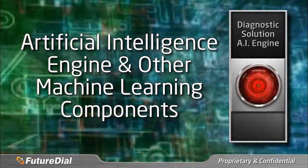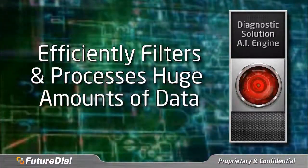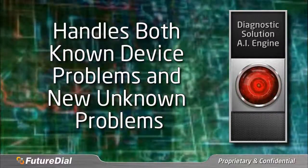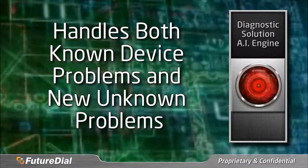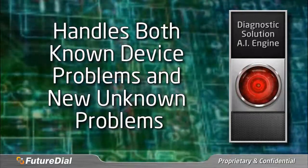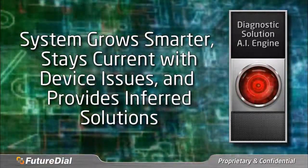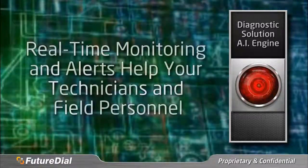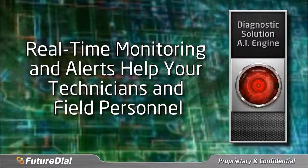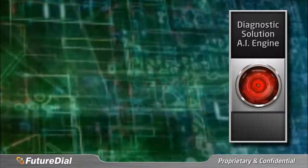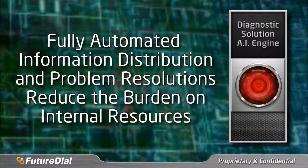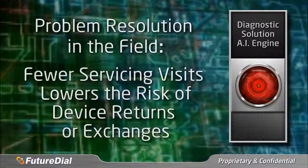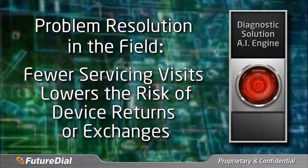The system utilizes an artificial intelligence engine and other machine learning components to efficiently filter and process huge amounts of data in the knowledge base to serve up precise, relevant solutions to device problems. The system can automatically handle known problems that have existing solutions in the knowledge base, and it can also assist your technicians to discover and devise new solutions for newly reported unknown problems. The AI engine and knowledge base grow and become smarter over time, staying current with device issues and providing intelligently inferred solutions to problems. The system provides real-time monitoring and alerts to help your technicians and field personnel stay on top of breaking issues for timely responses. Powerful decision engines and servers automate much of the information distribution and resolution of known issues to newly affected customers, relieving the burden on your internal resources. Problem resolution in the field leads to fewer service visits, which leads to a lower risk of returns or exchanges.